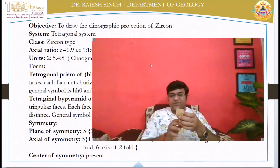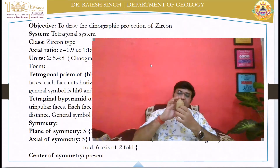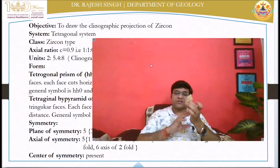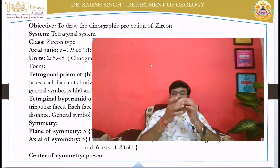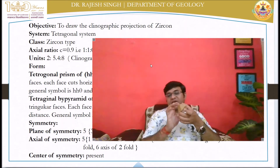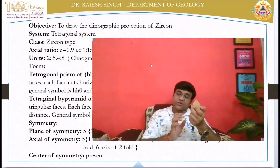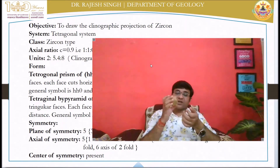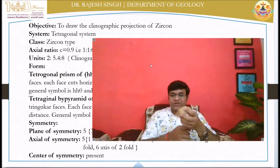Regarding the symmetry elements: along the C axis you will get four-fold symmetry. If you rotate along the other axes you will get two-fold symmetry — two are the diagonal axes and two are the axial crystallographic axes, giving two-fold symmetry, and one is four-fold. So the total axes of symmetry are five.